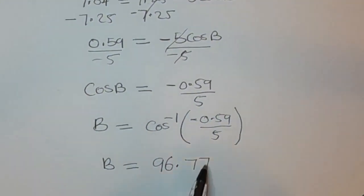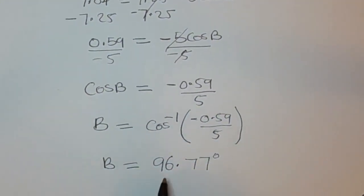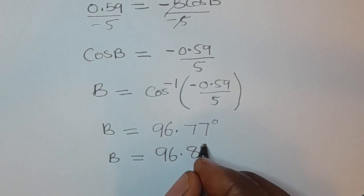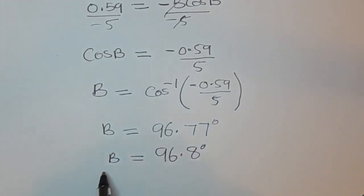So these are degrees. Let's round this answer off to one decimal place or three significant figures. So we have B is equal to 96.8 degrees.